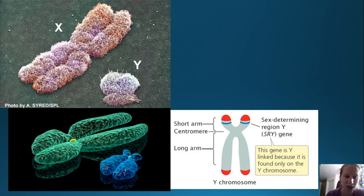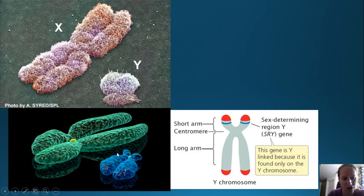Here is a picture of the X and Y chromosomes. This one is the X chromosome and the smaller one is the Y chromosome, named because that's what they look like.